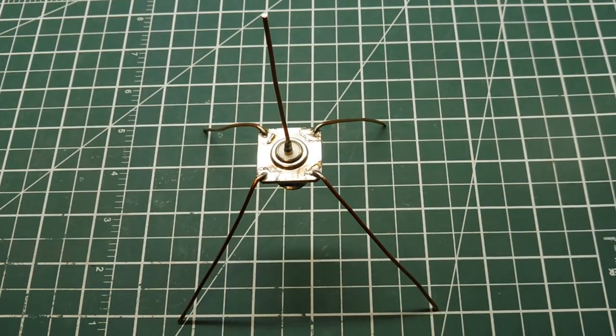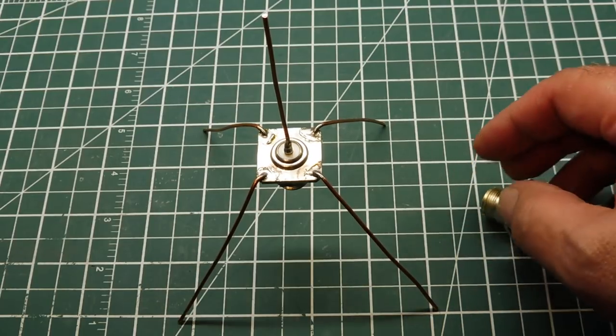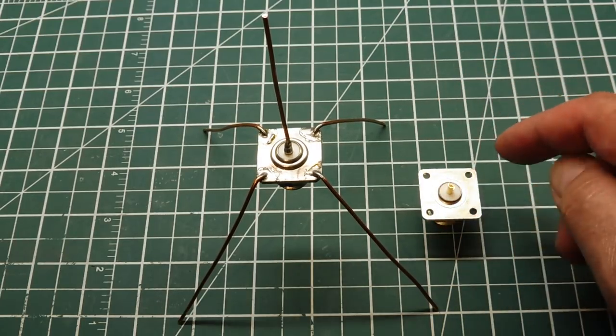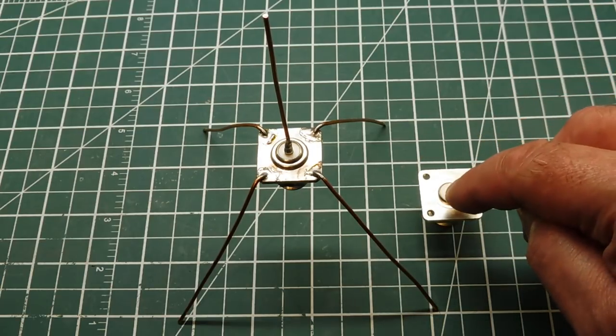So all you need is a chassis mount, female end connector, and we are going to solder in 4 radials into the mounting holes, and a radiator into the center.